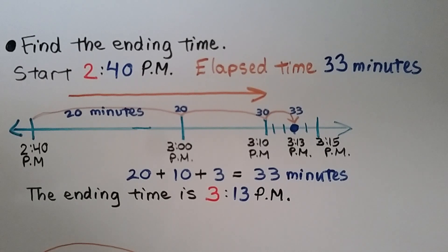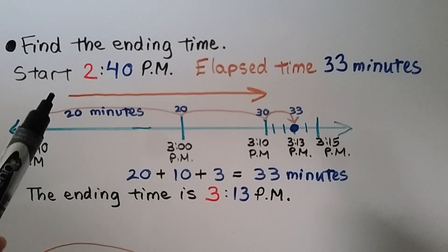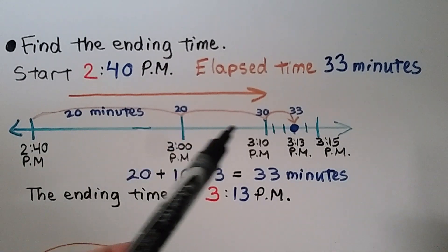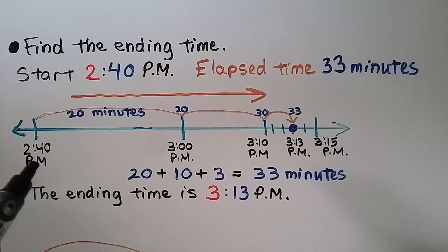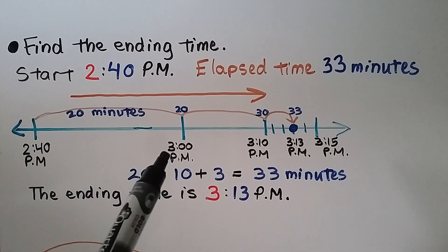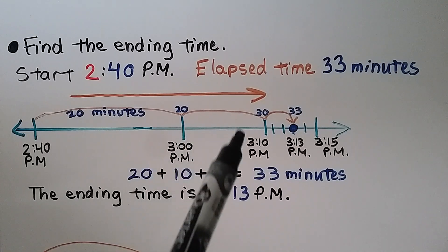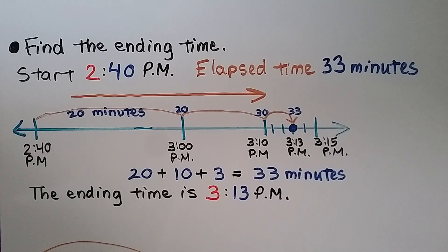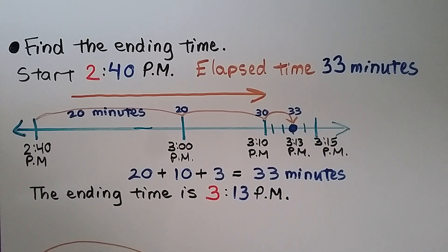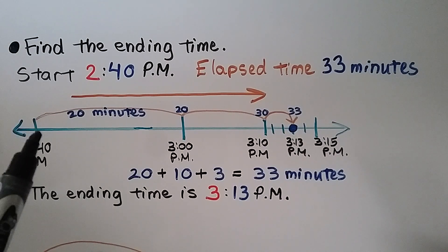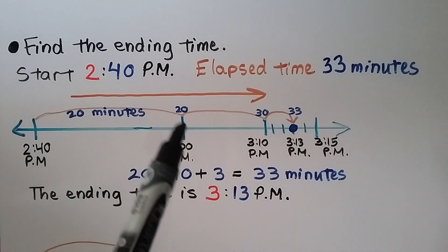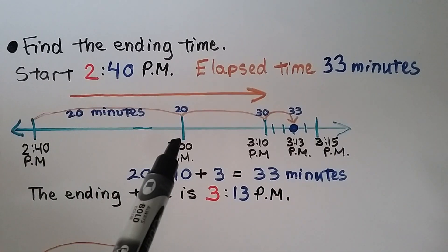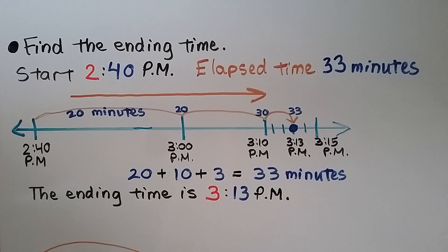This problem gives us a start time of 2:40 p.m. and an elapsed time of 33 minutes, and asks us to find the ending time. Because we have the starting time, we start on the left and go forward to the right. We start at 2:40 and jump 20 minutes to 3:00, then jump another 10 minutes to 3:10, then three more minutes to reach 33 total minutes — arriving at 3:13 p.m. We did 20 + 10 + 3 = 33. The ending time is 3:13 p.m.